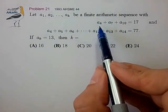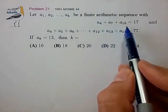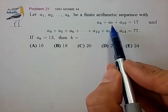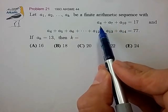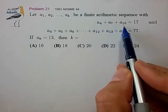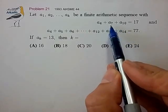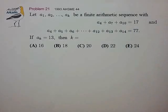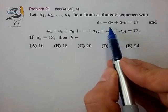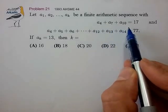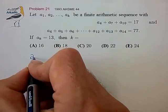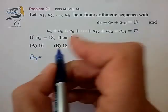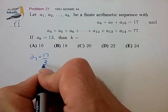Now we notice in this first group that the term indices are symmetric around 7. So 4 is 3 below 7 and 10 is 3 above 7. So these three terms form their own arithmetic series and from that we know that the center term is the average of the three terms and we quickly find that A7 is equal to 17 divided by 3.